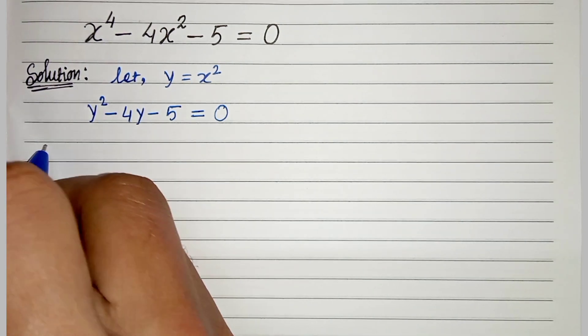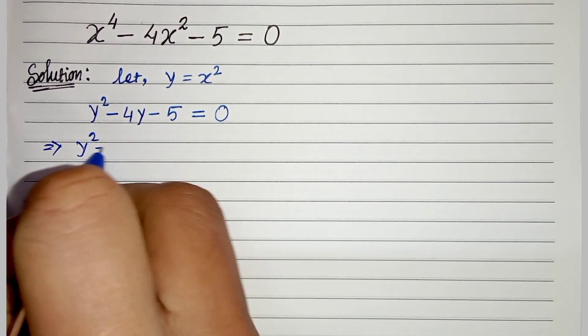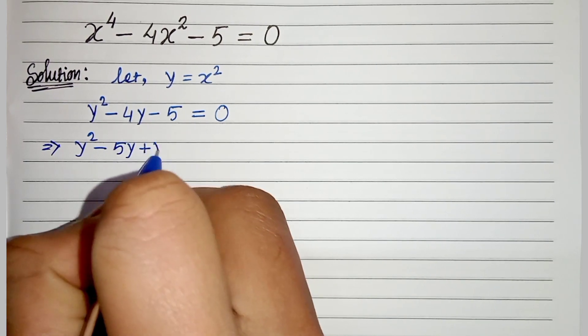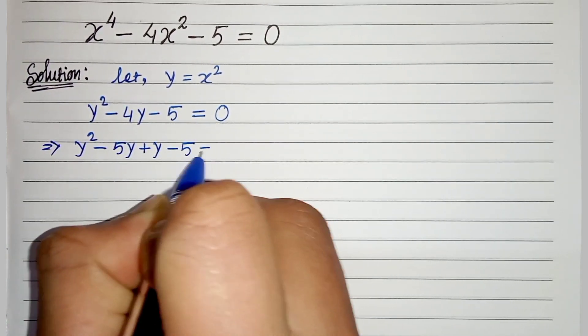So we will take y square minus 5y plus y minus 5 equals to 0.